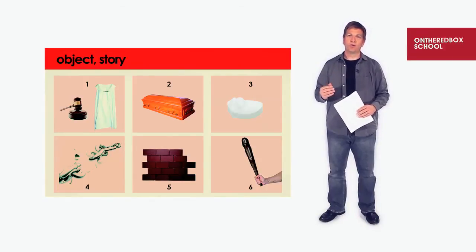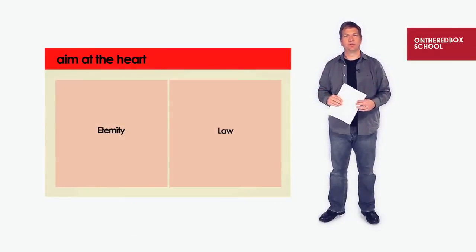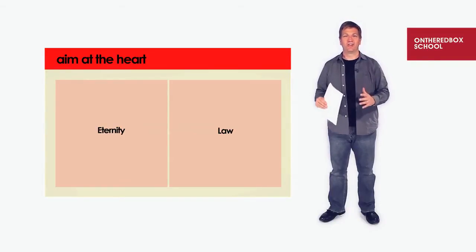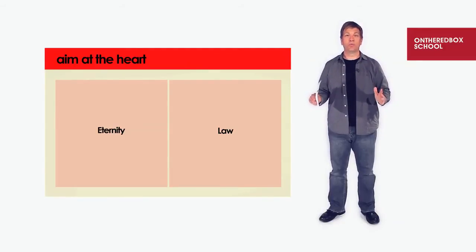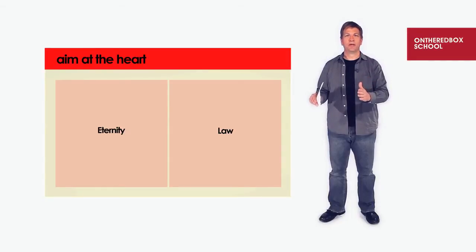The next thing I want to do, building on top of that, is we are going to aim at the heart when we preach. We're not aiming at the mind — we're going to aim at the heart, what's written on the heart. God has placed two things on the heart of every person: eternity and law. God has placed eternity — that desire to know what's going to happen after we die — and the law, which is the Ten Commandments. So we're going to keep that in mind when we preach. We've got our doctrine, we've got our object, and we're going to be aiming at the heart toward eternity and toward the law.